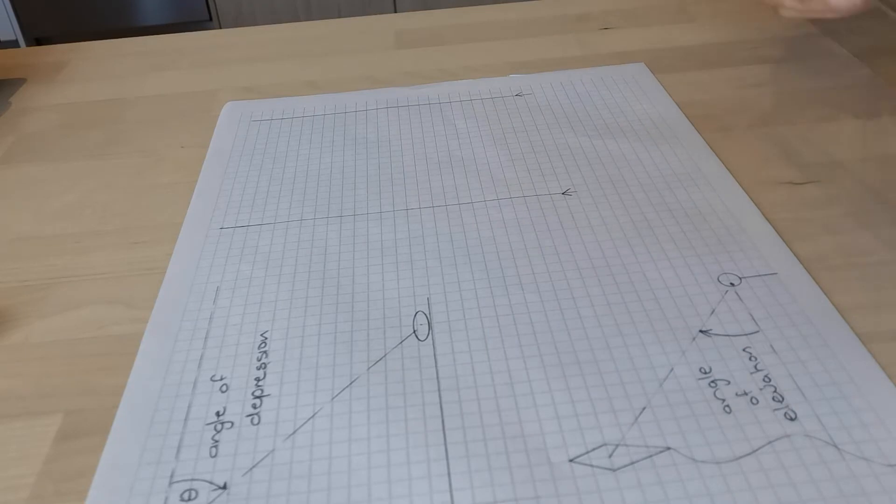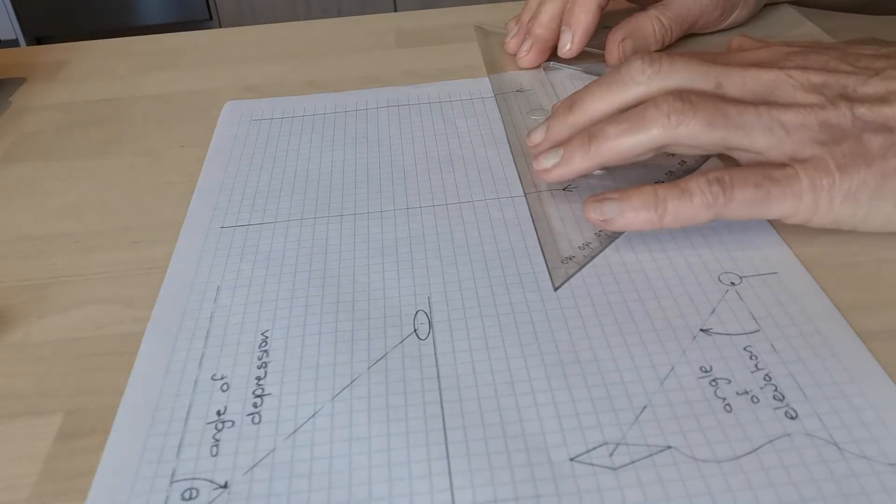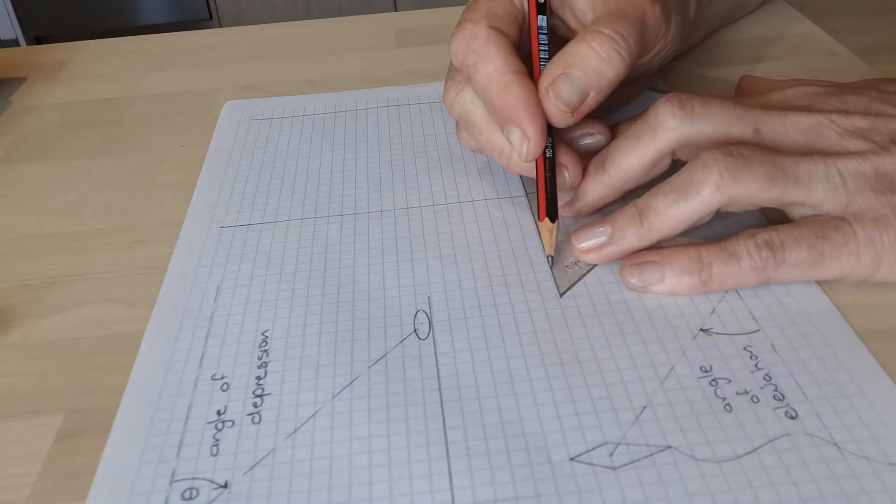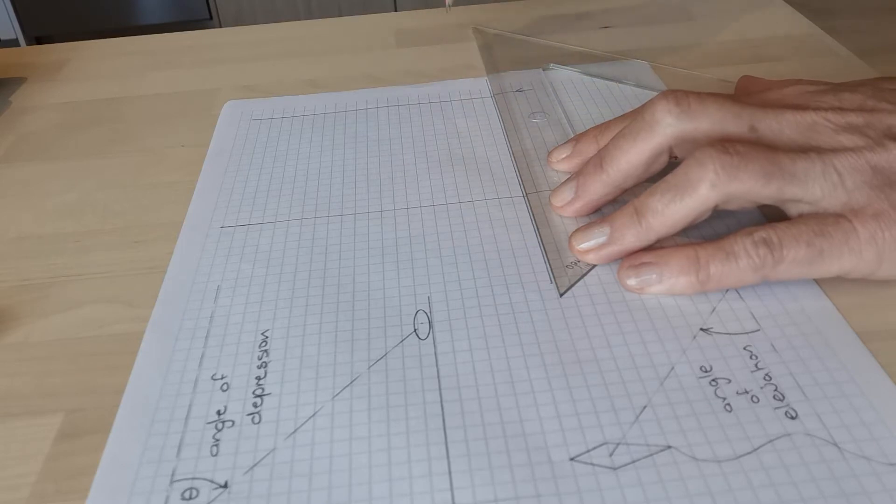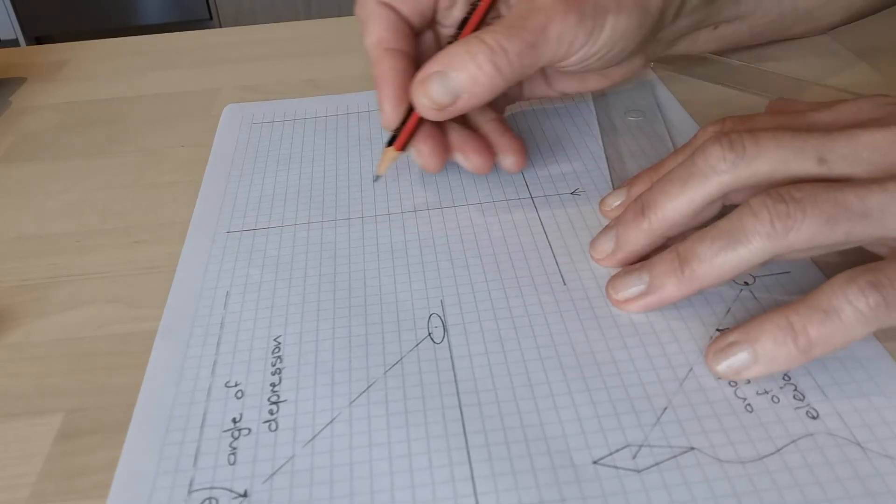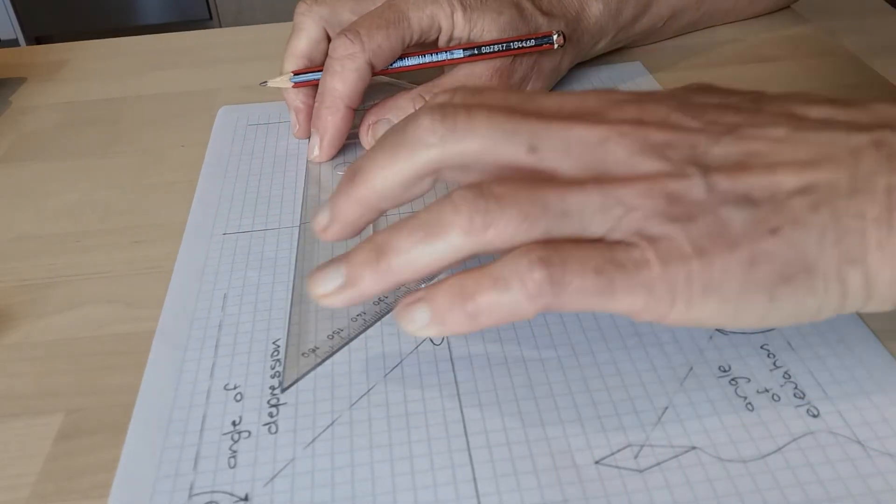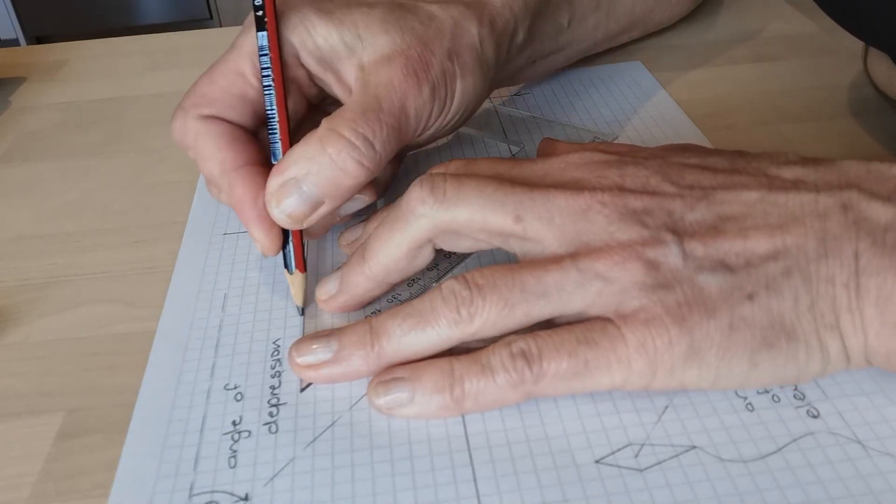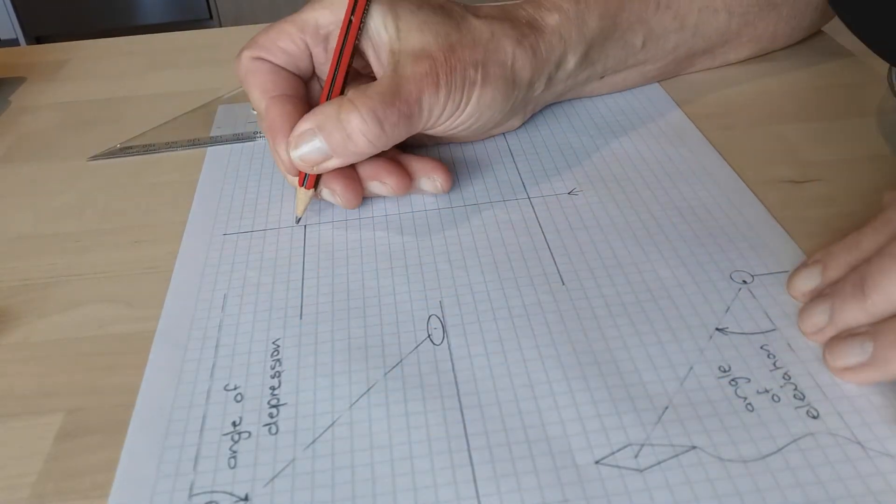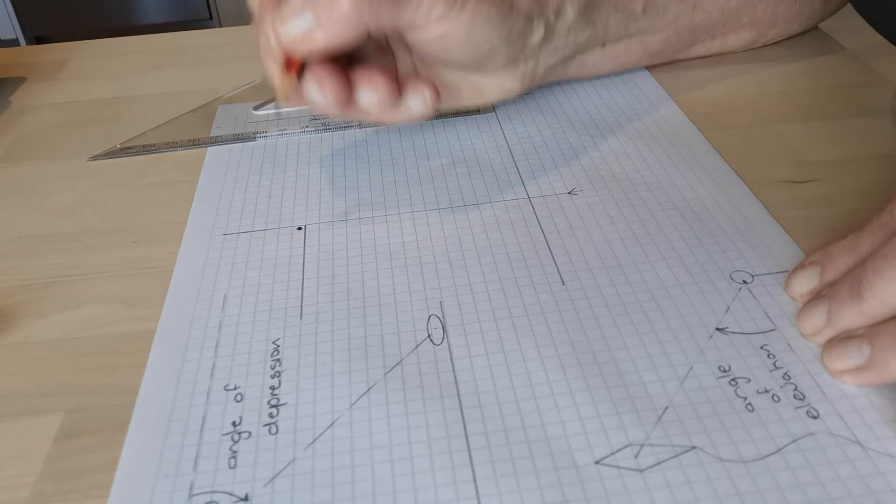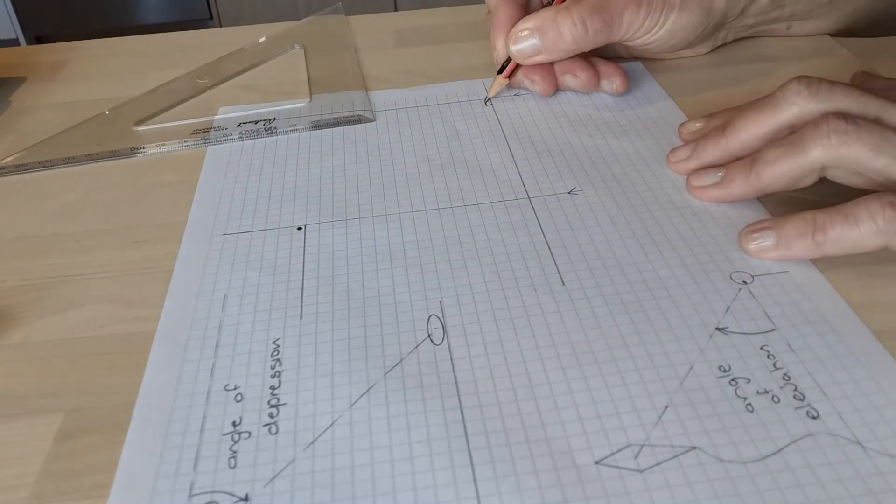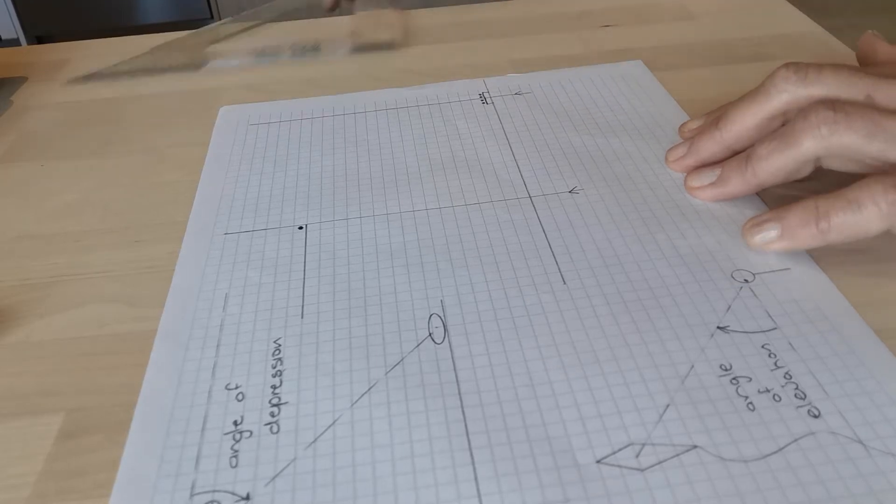So this is another scenario and in this scenario here we have the sea level and we have a cliff. Just imagine that you're on top of the cliff and here's your position here. And down on the sea we have a boat and there's some people in the boat and there they are.